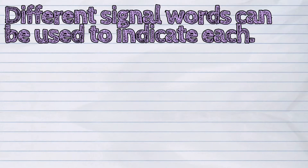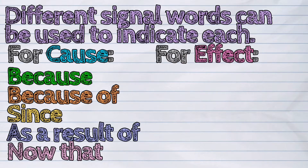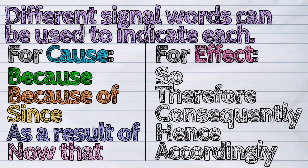Different signal words can be used to indicate each. For cause: because, because of, since, as a result of, now that. For effect: so, therefore, consequently, hence, accordingly.